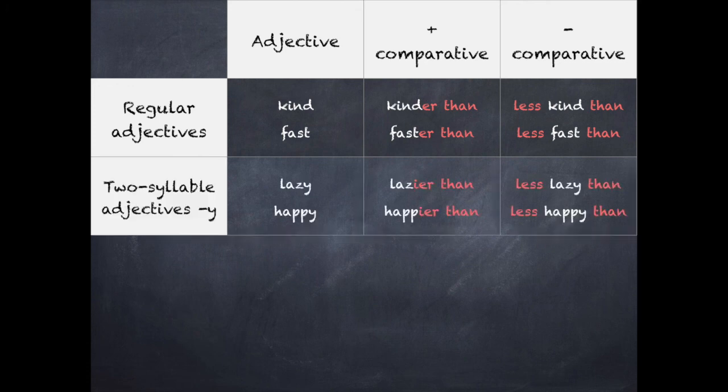If it is a short adjective, two syllables ending on y like lazy or happy, we will substitute that y for an i and then add er, like lazy, lazier than or happy, happier than. For the negative comparative form it's the same: less lazy than and less happy than.